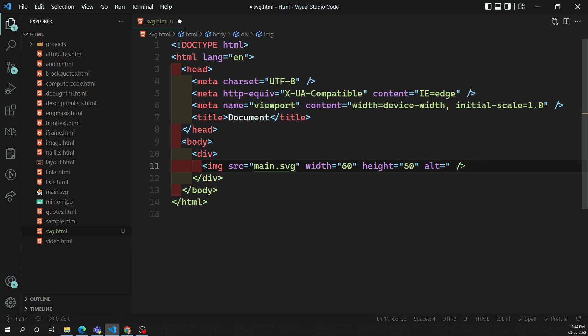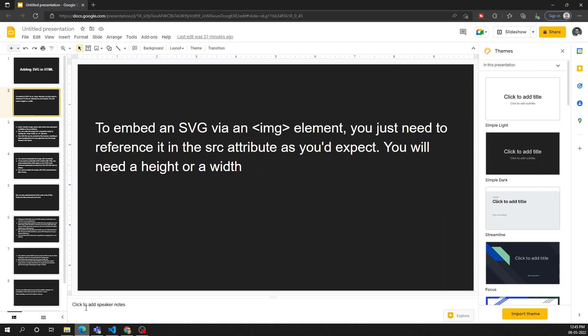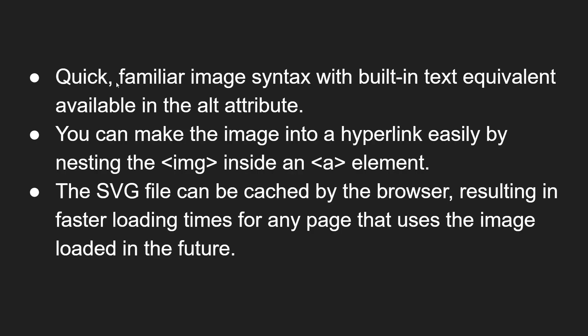The benefit of using the img tag is we can add an alt attribute — for example 'SVG image' — and also a title tag. When you hover over the image, the title text 'SVG image' is visible. Now let's look at the advantages of this method. Adding the SVG image is quick with familiar img syntax. There is built-in text equivalent available via the alt attribute. You can also make the image a hyperlink easily by wrapping it inside an anchor element.